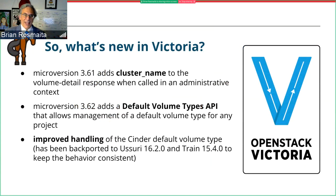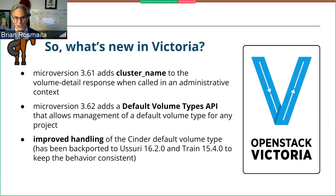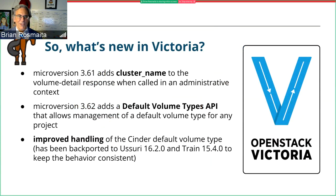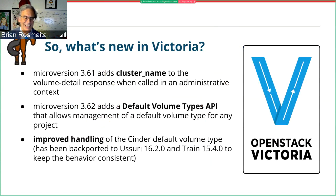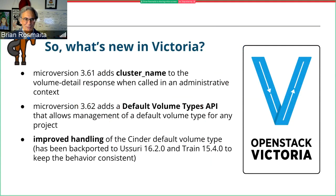MicroVersion 3.62 adds a default volume types API, allowing management of a default volume type for any particular project. Operators asked for a way to have particular projects use particular volume types tied to a particular backend or storage class. We also have improved handling of the Cinder default volume type, and this improved handling has been backported to Usuri 16.2.0 and to Train 15.4.0 to keep behavior consistent. Default volume types have been around for a while, and in Train they were made mandatory — Cinder no longer allows untyped volumes.